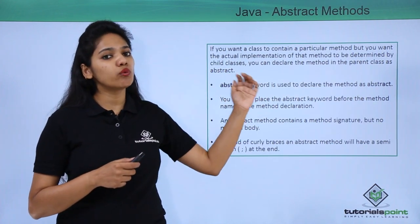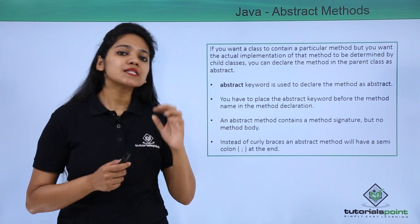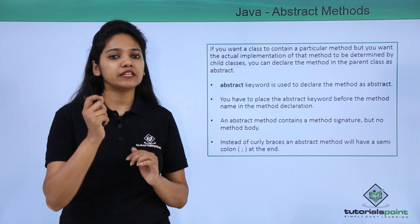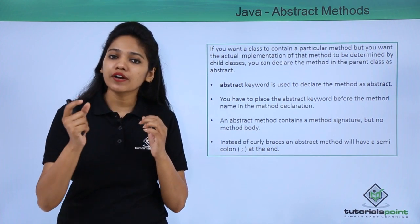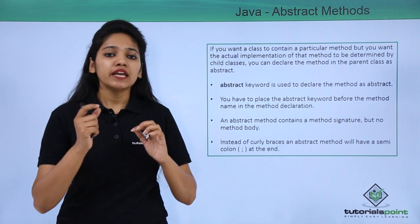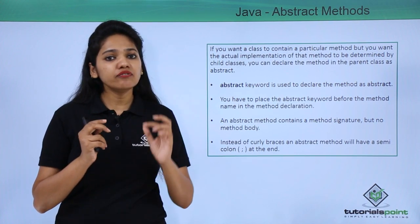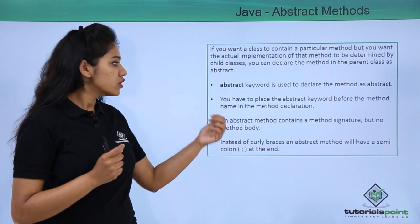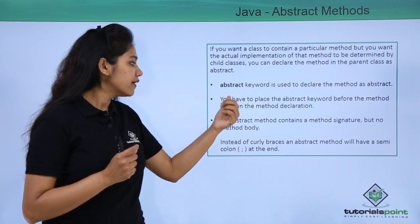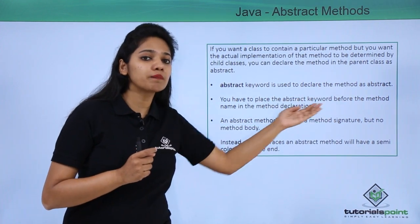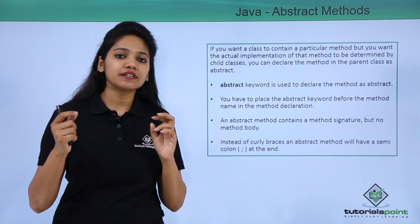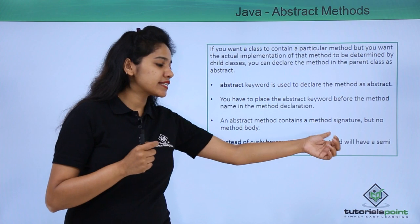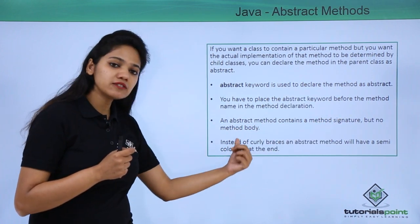An abstract class may contain abstract or non-abstract methods. An abstract method must include the 'abstract' keyword in its declaration. The placement is: access modifier, then the abstract keyword, then the return type, then the method name. The abstract method signature ends with a semicolon, not curly braces.